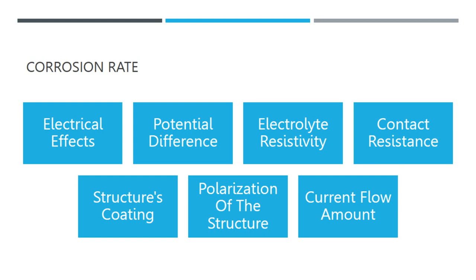The fifth aspect is the structure's coating. Since most coatings are dielectric in nature, coating a structure typically increases the anode and cathode's contact resistance. The sixth aspect is polarization of the structure. Polarization film refers to a film that forms on the electrode surface as a result of electrode potential changing due to the flow of electrochemical current. On the cathode's surface, a tiny layer of hydrogen makes a part of the polarization film, which acts as an additional coating, drives water away from the cathode surface, reduces ion concentration in the electrolyte, raises contact resistance to the electrolyte, and essentially reduces or stops corrosion cell current flow.